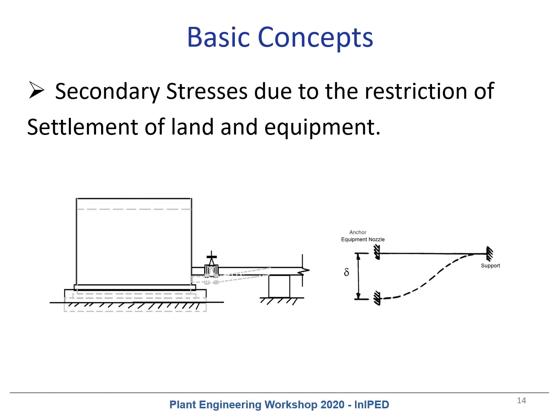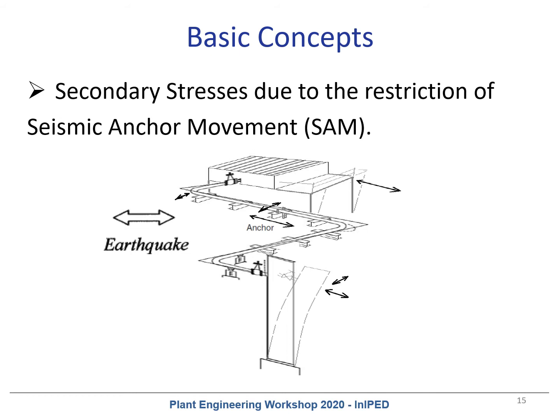In the second case, we have secondary stress from a settlement with a restriction. If we have a settlement without a restriction, the equipment can settle correctly and not produce any force in the pipe. But if the pipe has a restriction, we force the pipe and also force the connection. In this case, we need to use a more flexible support or make the pipe more flexible to reduce the secondary stress and forces over the connection.